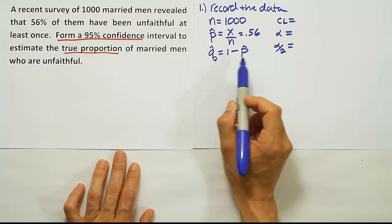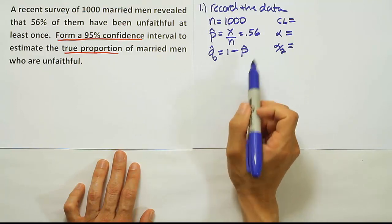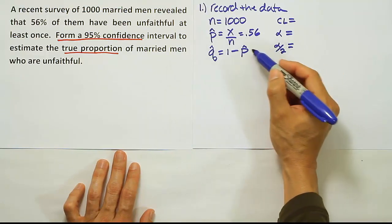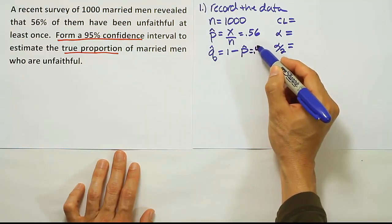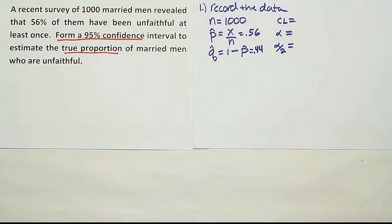Q-hat is going to be 1 minus P-hat. P-hat is this decimal above, so 1 minus that is going to be the remaining 44% that did not cheat. So 0.44.